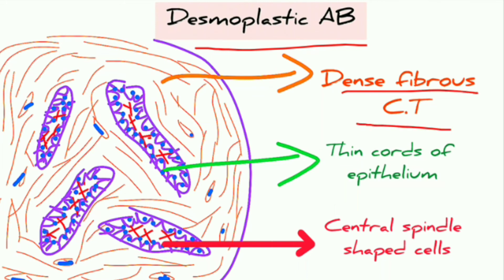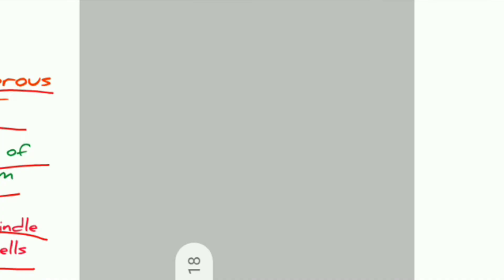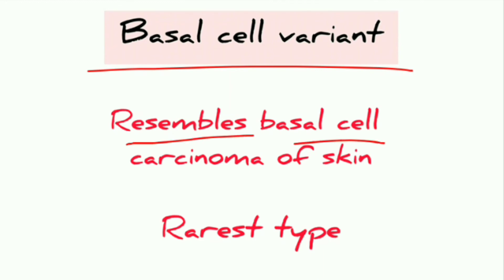In desmoplastic ameloblastoma, dense fibrous connective tissue is the most important feature. Thin cords of epithelium are seen instead of round islands, and central spindle-shaped cells are also seen.